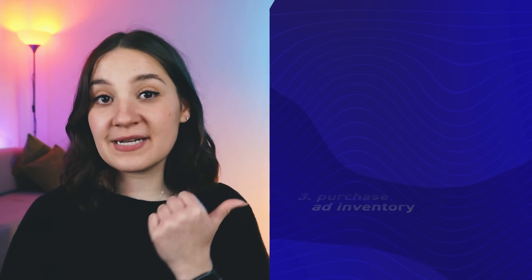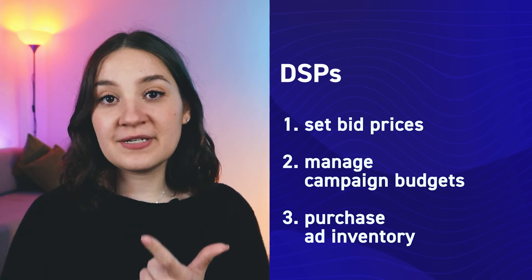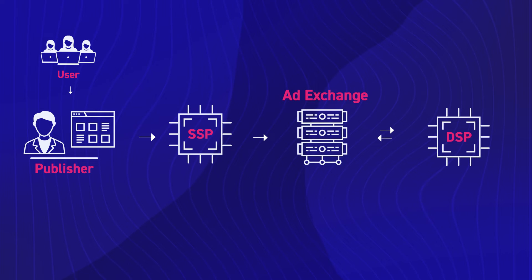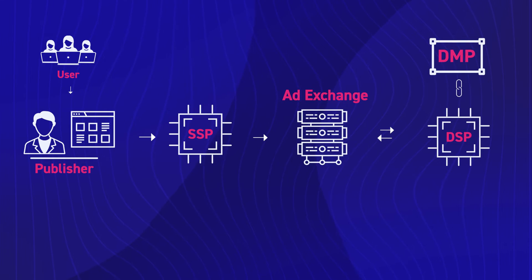DSPs let advertisers set bid prices, manage campaign budgets, and purchase ad inventory. The DSPs are connected to data management platforms, or DMPs, which organize and manage audience data. They help advertisers decide which users to target based on the data collected and sent over by the publisher.